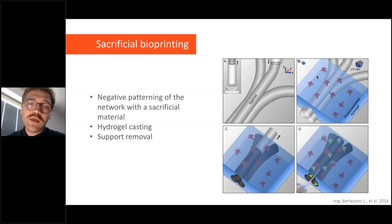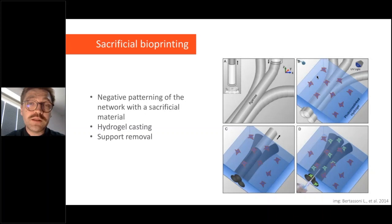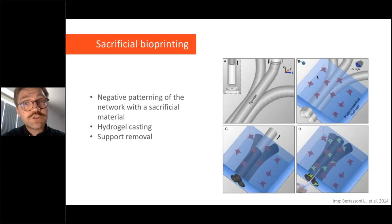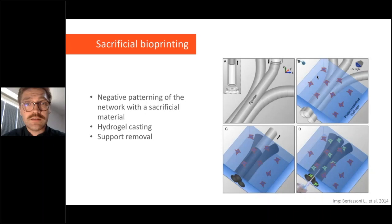The first technique is sacrificial bioprinting. In this strategy, you pattern a negative space of channels and vasculature-like networks using sacrificial materials — for example Pluronic or carbohydrate glass. You then cast or bioprint the hydrogel structure around it and evacuate the sacrificial ink. You could have cells in the surrounding matrix, and also flush the channel with cells to coat the inside, creating a co-culture of cells and vasculature-like networks.